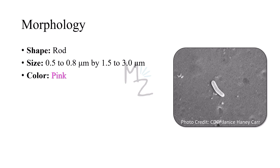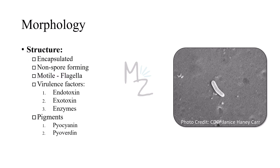Morphology: Pseudomonas aeruginosa is a gram-negative rod — rod-shaped, as seen in the microscopic picture. It varies in size from 0.5 to 0.8 micrometres by 1.5 to 3 micrometres. It's pink-colored because it's gram-negative. Structure: it is an encapsulated, non-spore-forming, motile bacterium due to its flagella. It has virulence factors including endotoxin, exotoxin, and enzymes, and produces pigments like pyocyanin and pyoverdin.